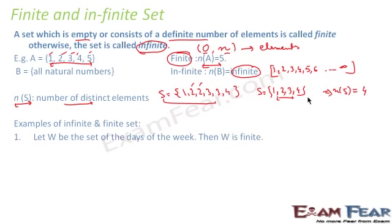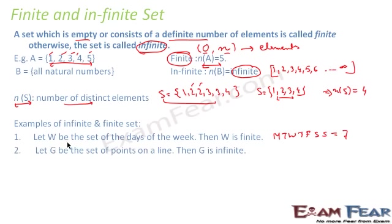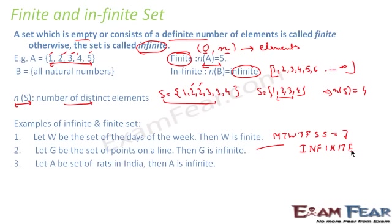Let's look at examples of finite and infinite sets. Set W is the set of days of the week: Monday, Tuesday, Wednesday, Thursday, Friday, Saturday, Sunday — seven days, so this is a finite set. Set G is the set of points in a line: there are infinitely many points on a line, so G is an infinite set. Similarly, the set of rats in India would also be an infinite set.